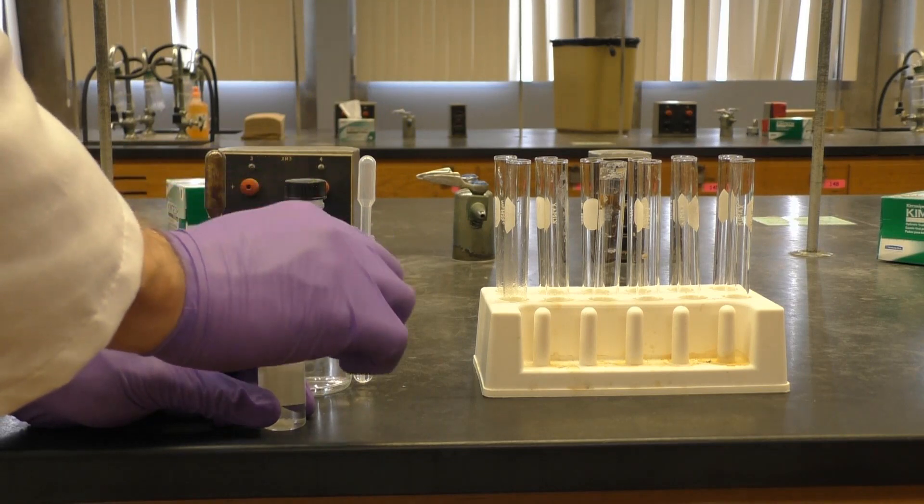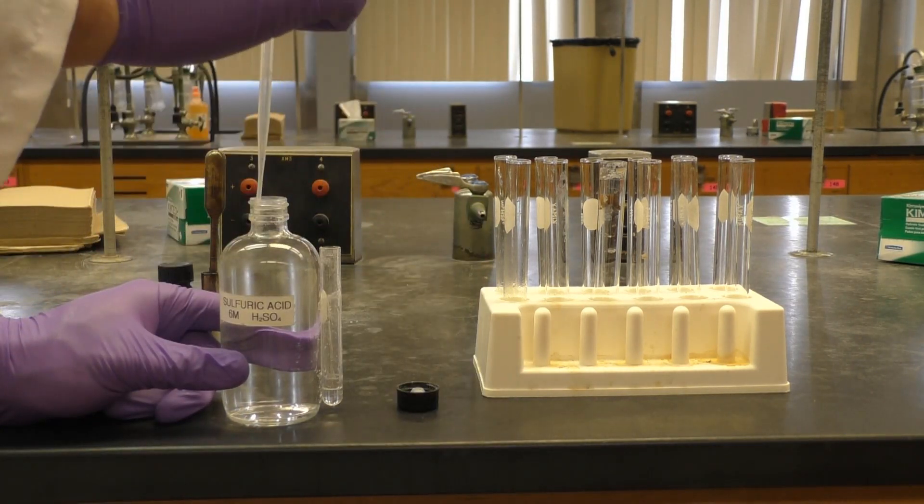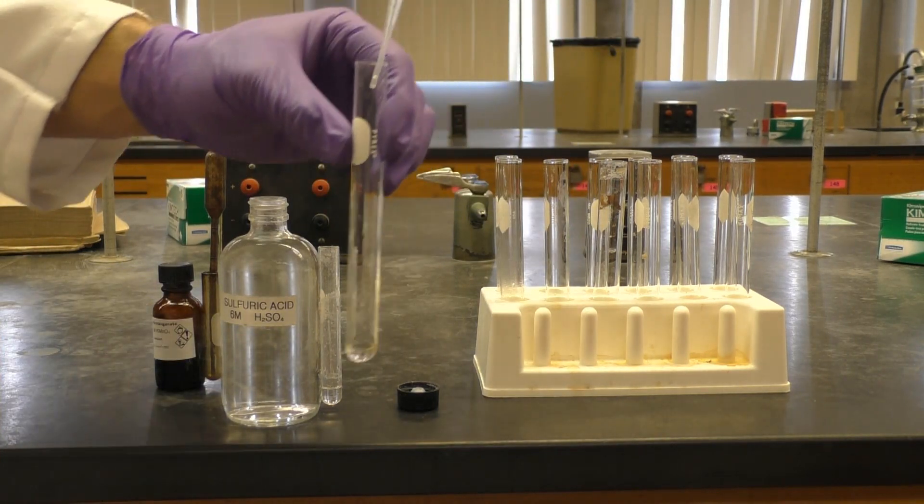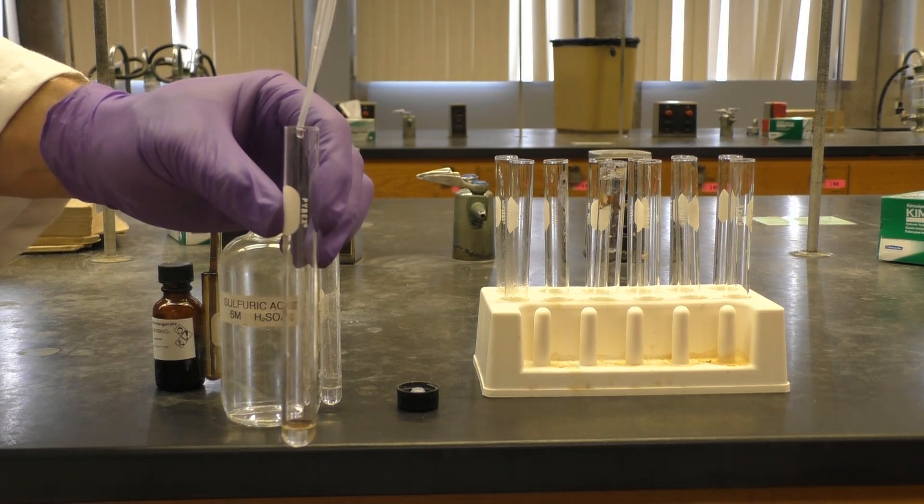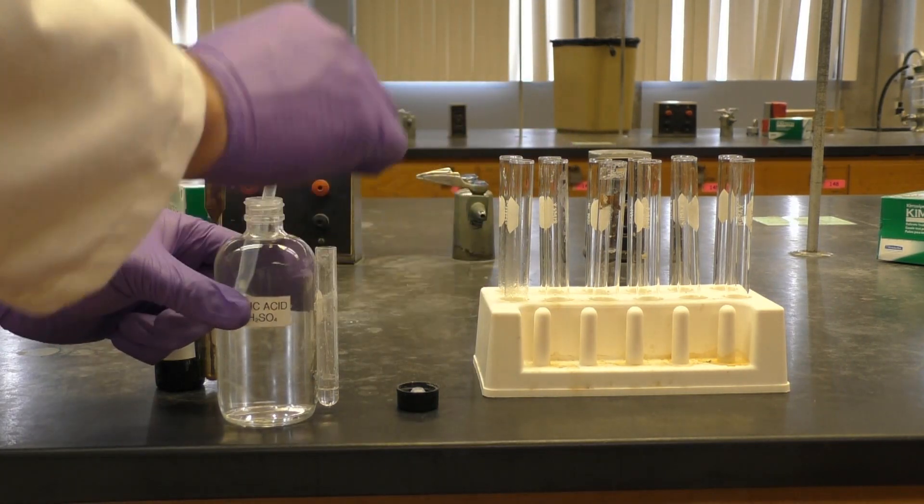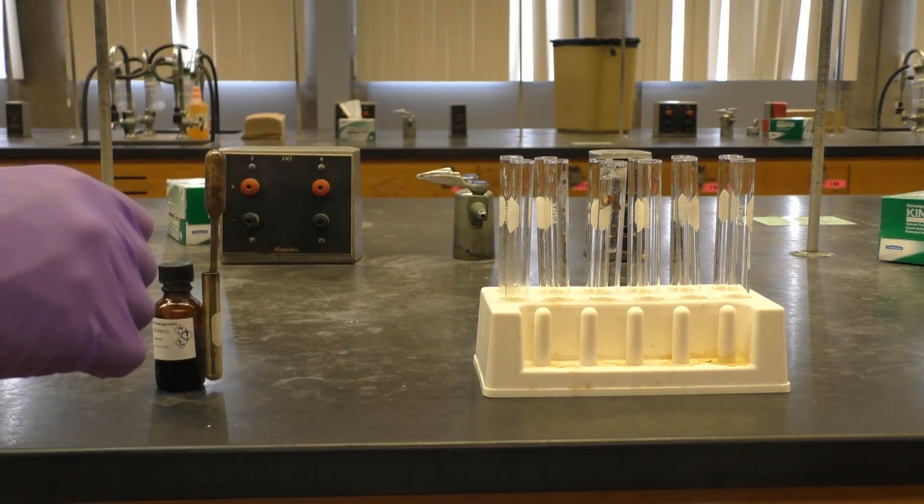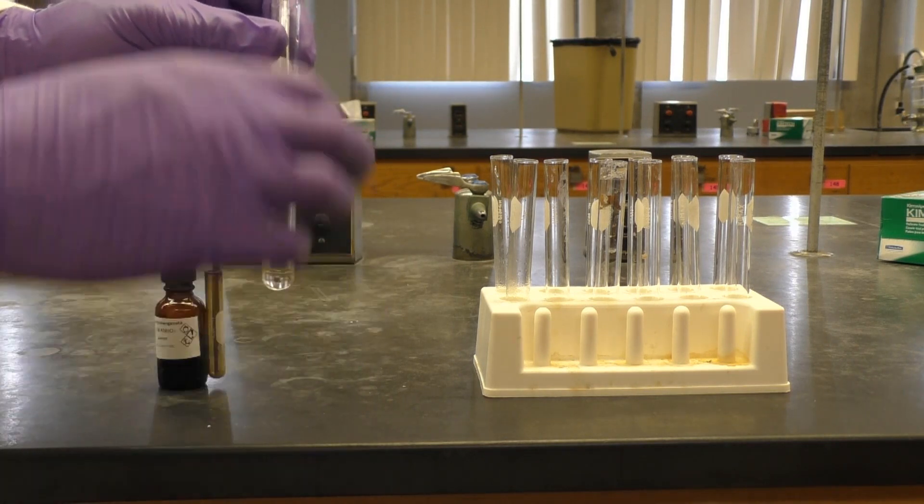Here's another redox reaction, this time with a well-known oxidant, potassium permanganate. First, we're adding one milliliter, just one pipette full, of 0.1 molar sodium oxalate. Now, we're adding 10 drops of 6 molar H2SO4. Lastly, here we add two drops of 0.1 molar potassium permanganate.